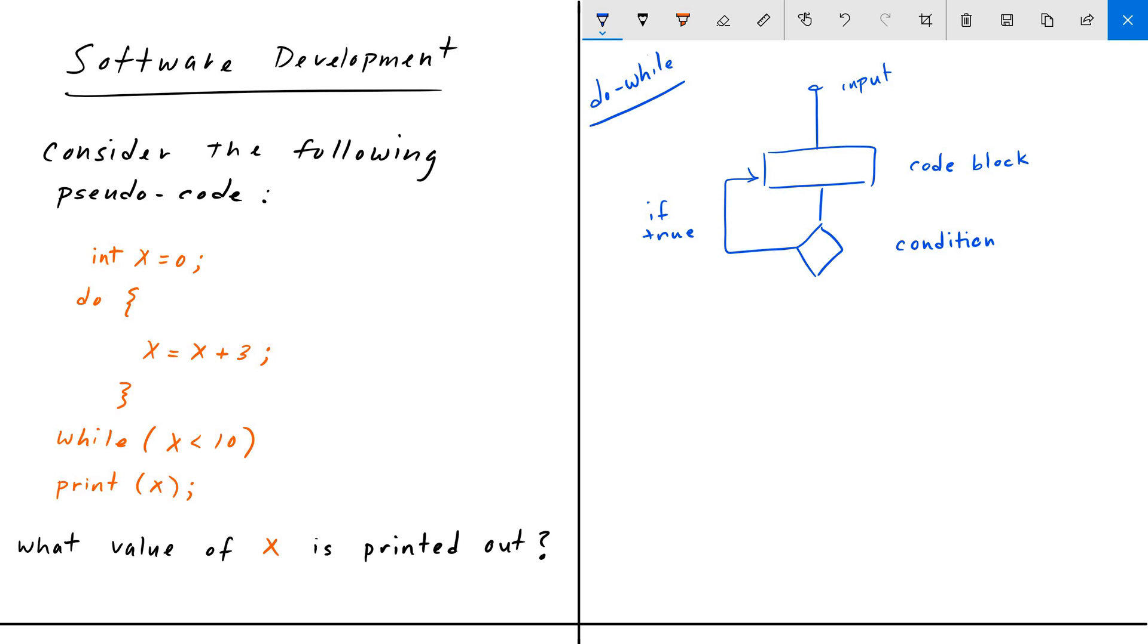So if true, and if it's false, we exit the loop. So if the condition is false, we exit the loop and this will be your output.